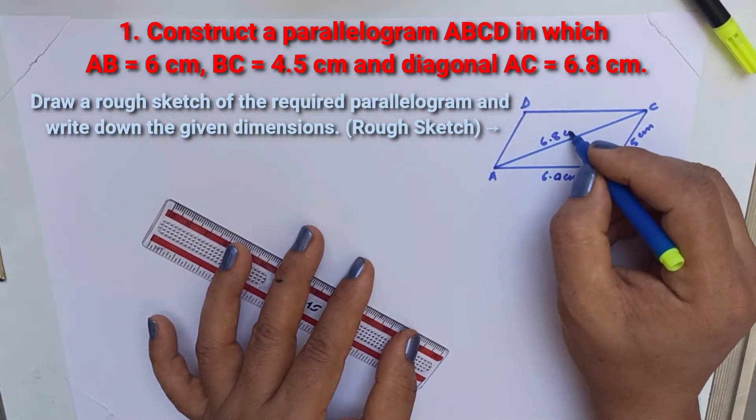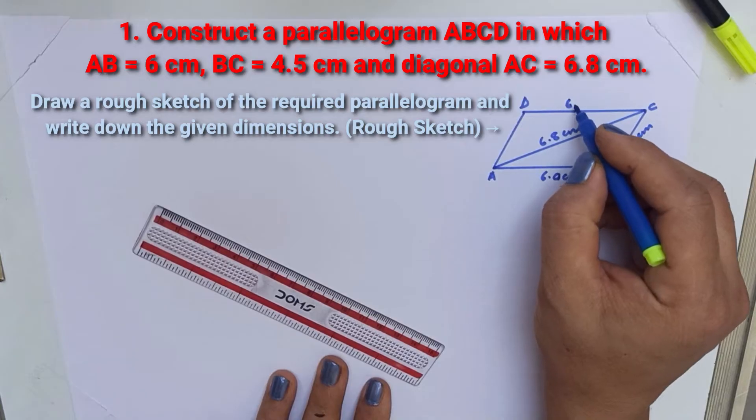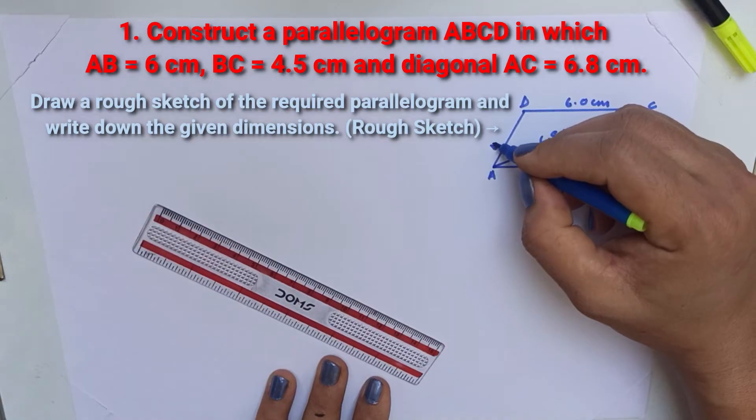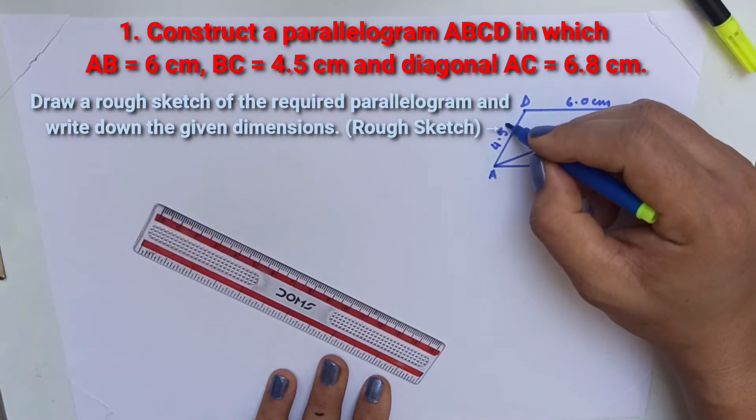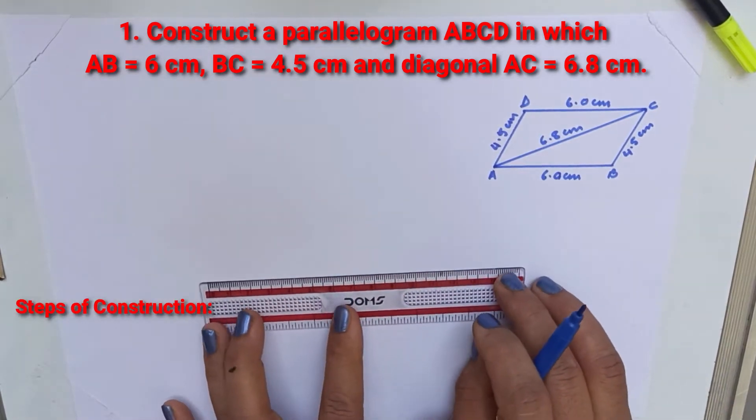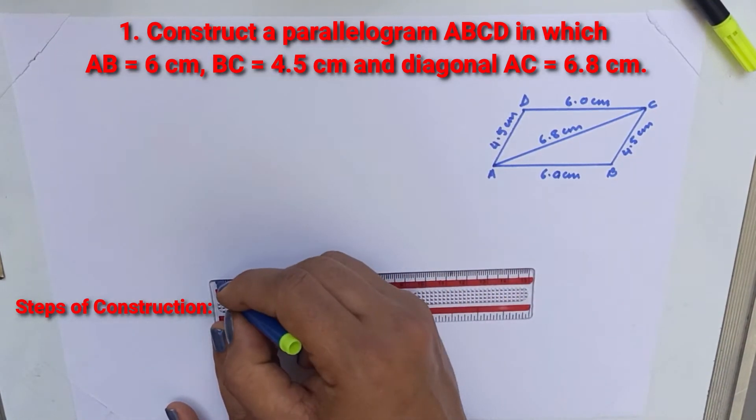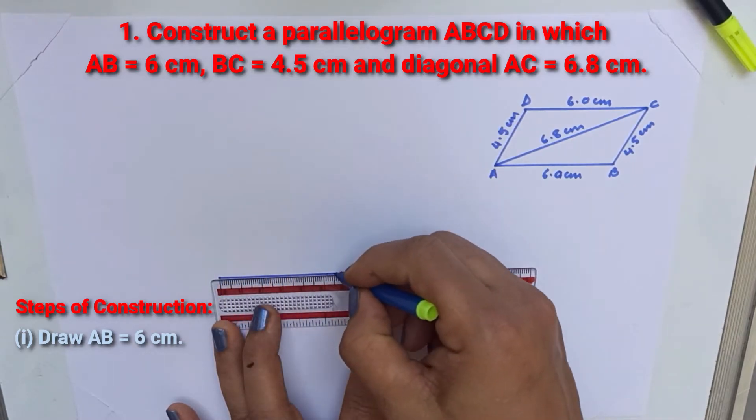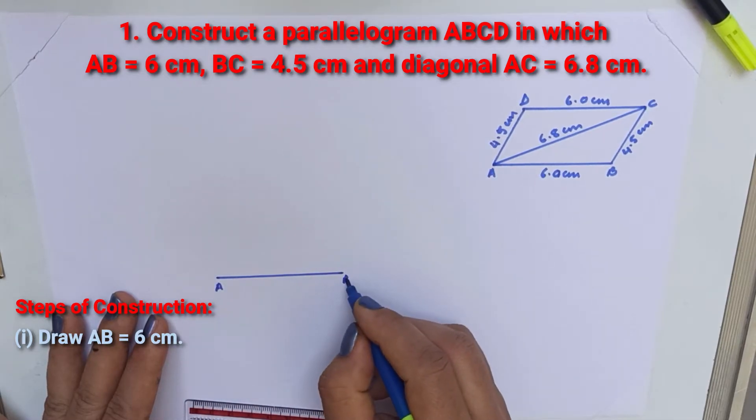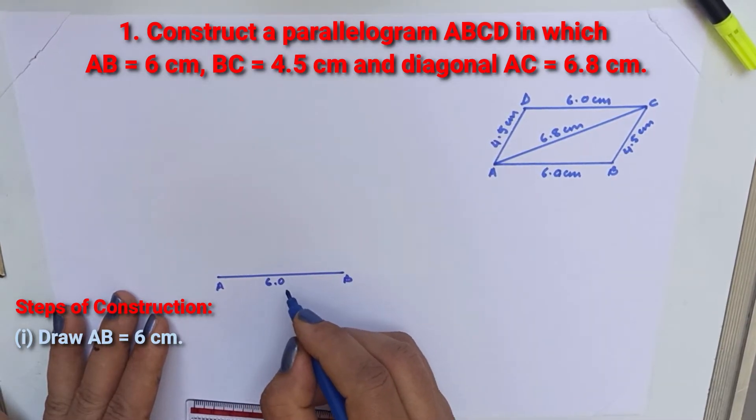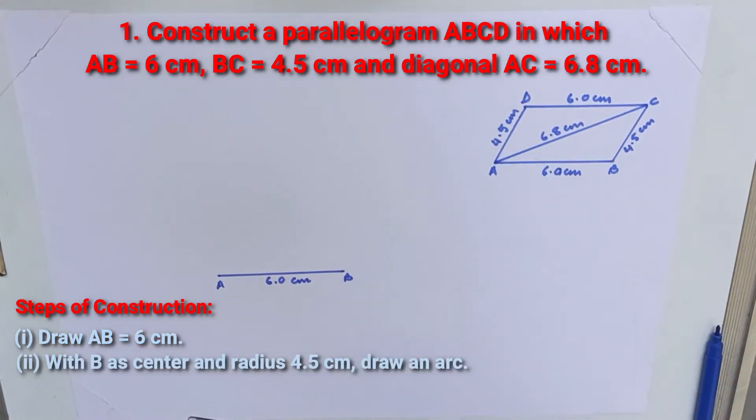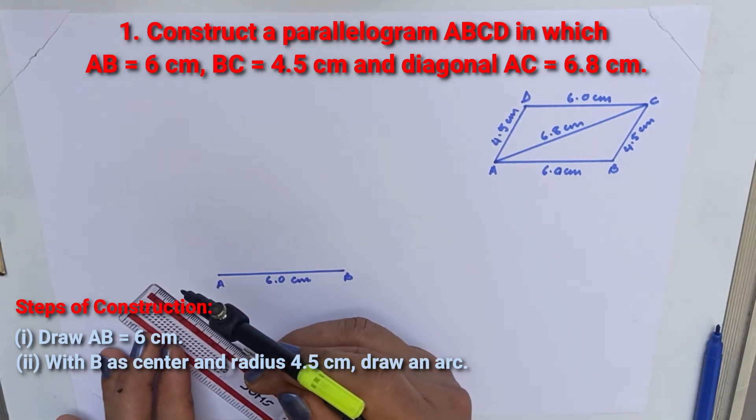You should always remember to draw a rough figure before construction. This is a parallelogram. The two opposite sides are equal and parallel. Let us start with AB equal to 6 cm. BC is equal to 4.5 cm and AC is equal to 6.8 cm.